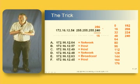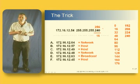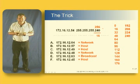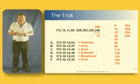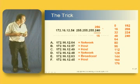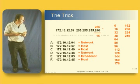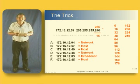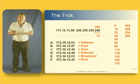The question asks us which ones are on the same subnet as .54. Well, .54 is on subnet 48. So the only two hosts on the same subnet are .57 and .49. There's the answer — we're done.